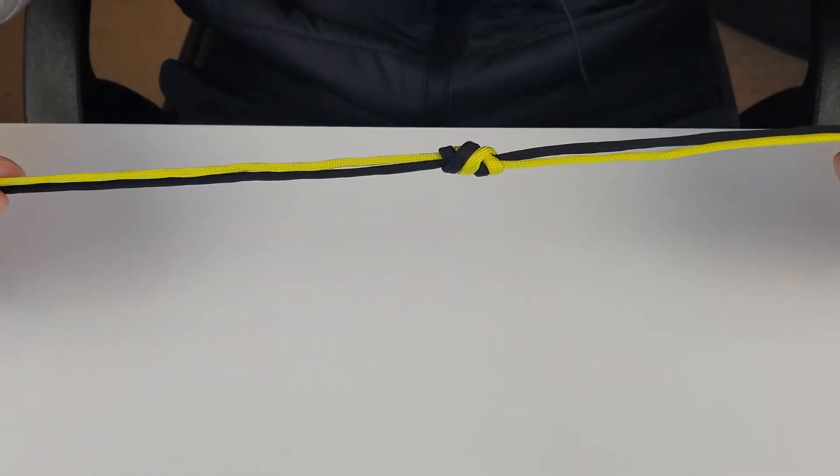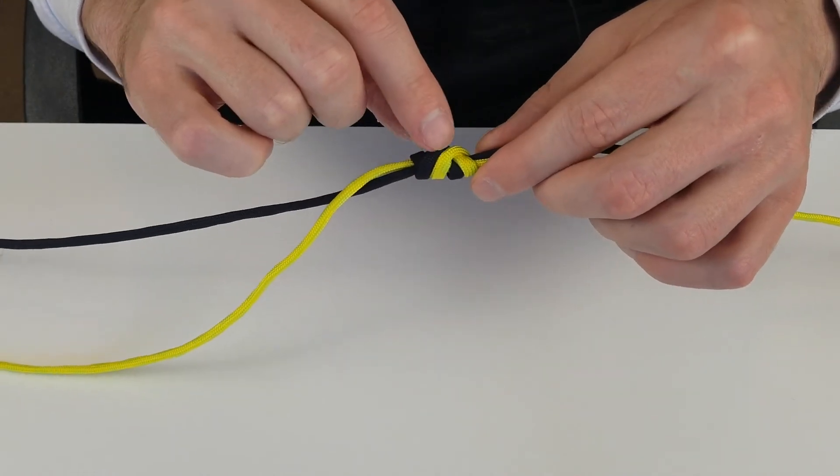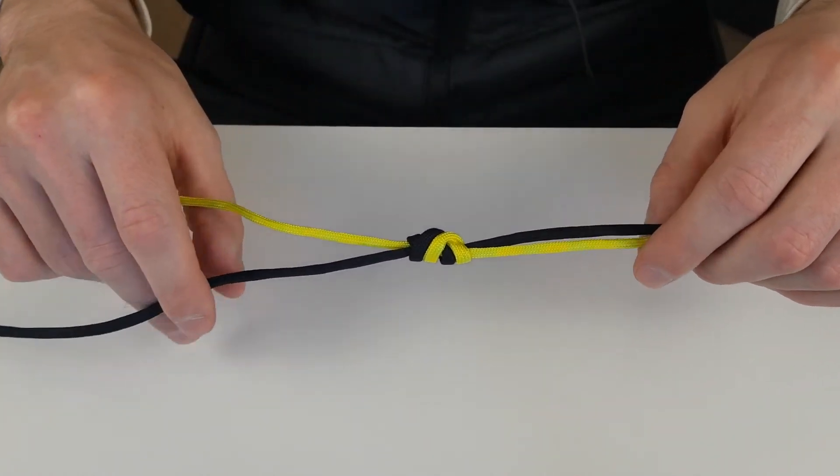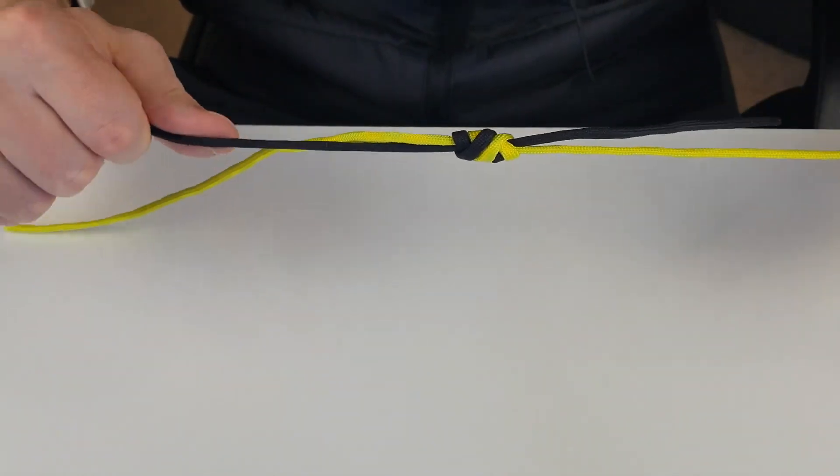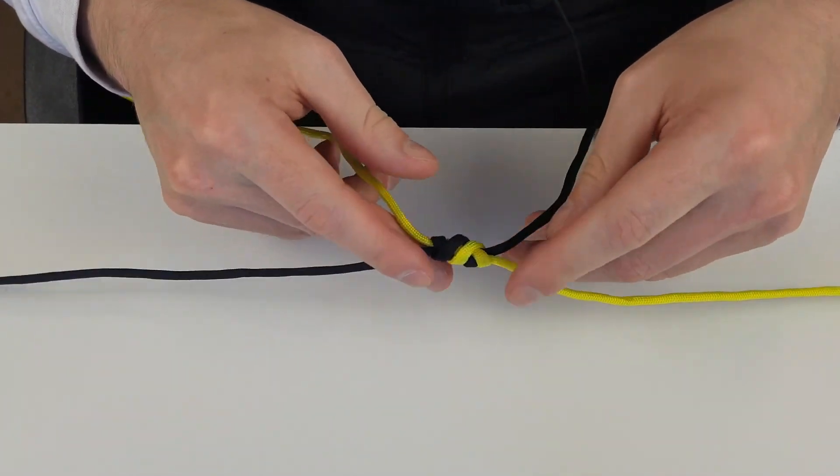All you're going to do now is grab the main parts of the line, really cinch them down tight, cut off your tag ends, and you are good to go.